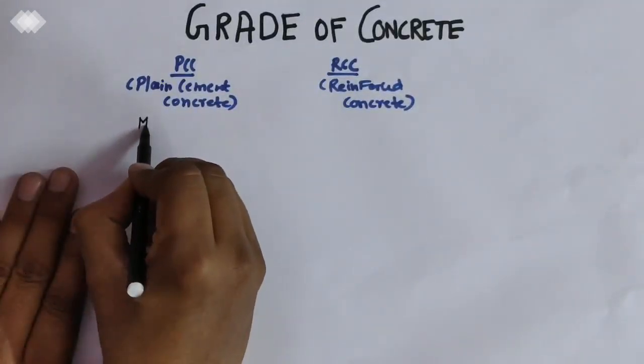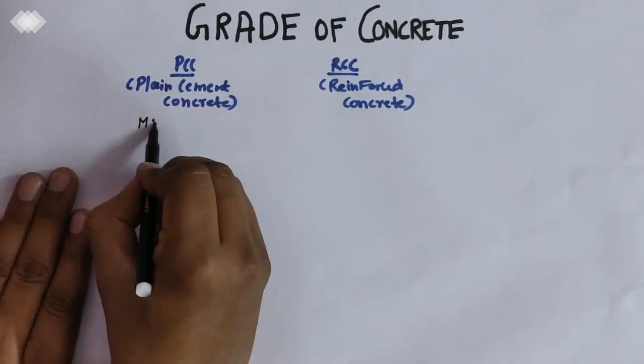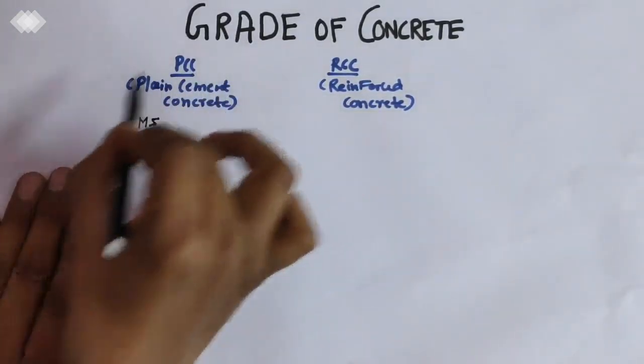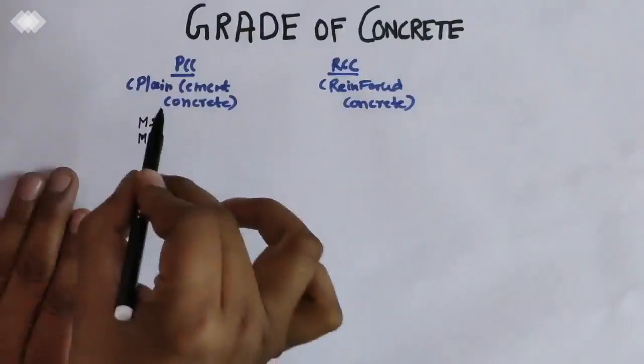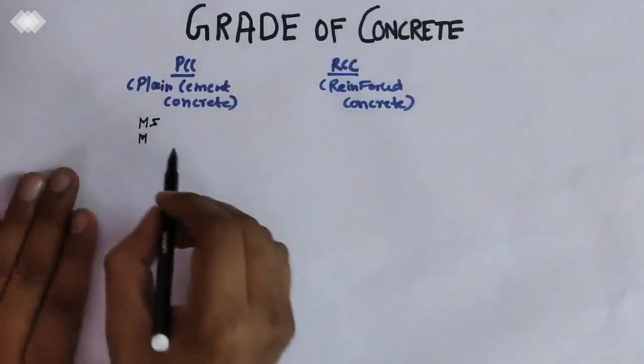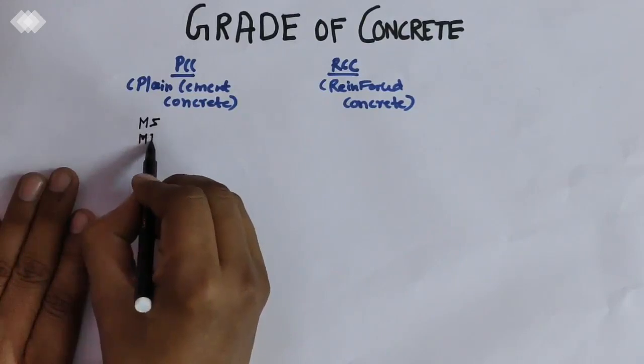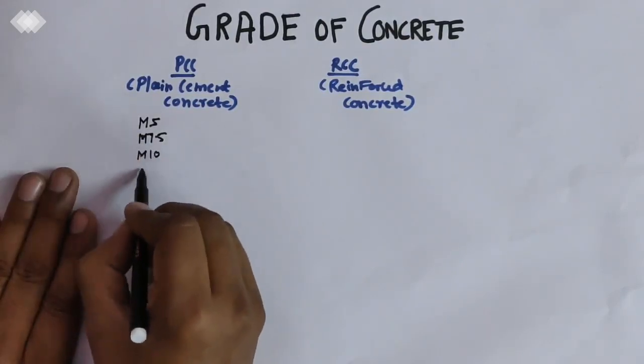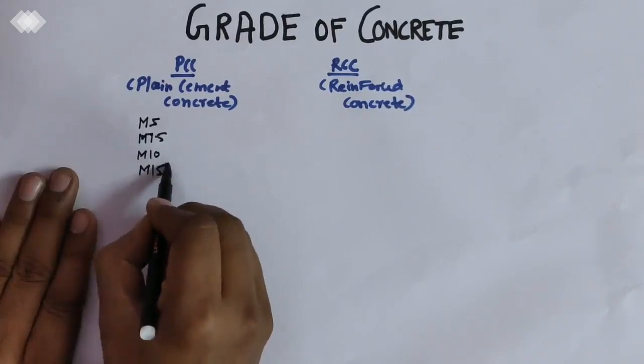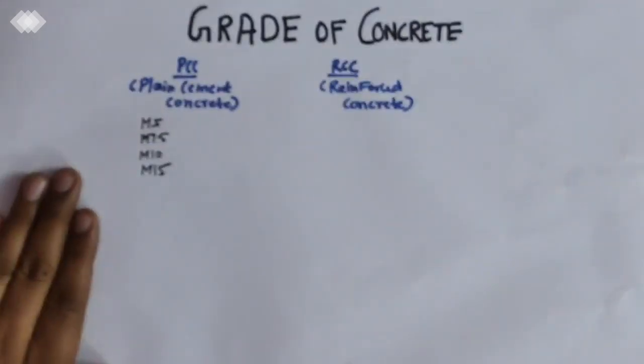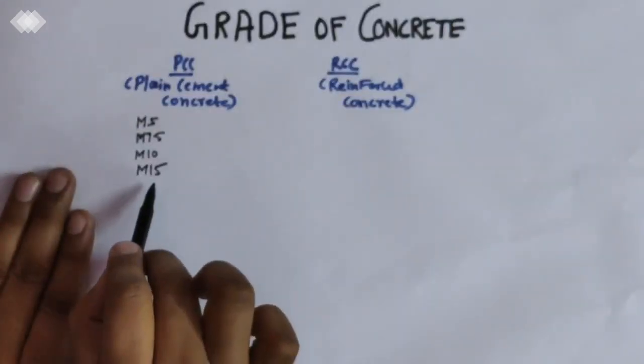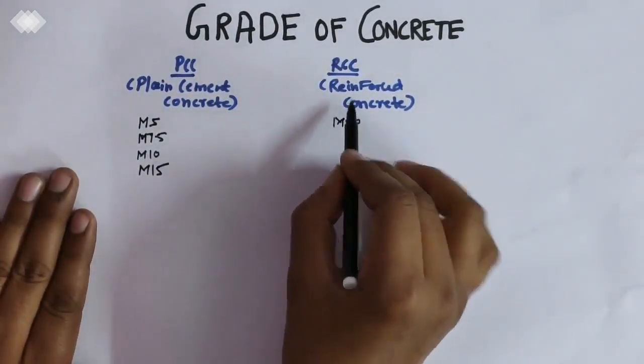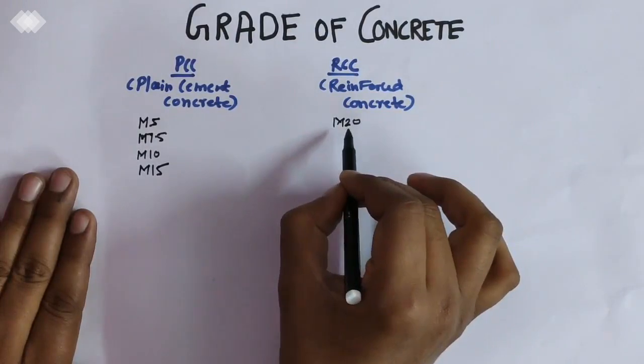What are the different designated concrete grade ratios? Under PCC, different types of grades are M5, M7.5, M10, and M15. Next, above M15 comes M20, which is the minimum grade of RCC.